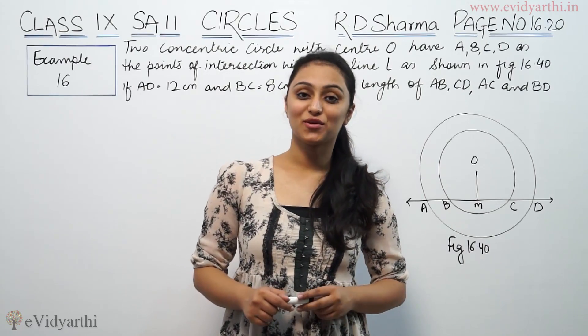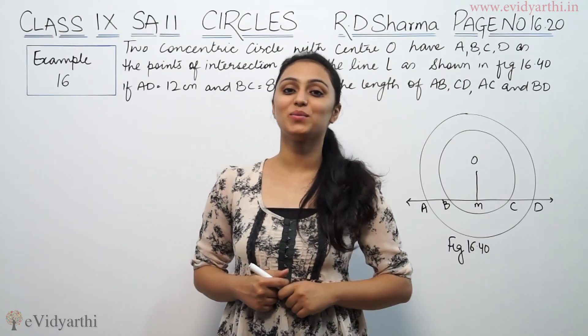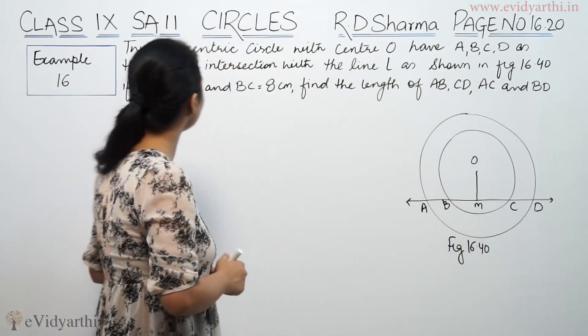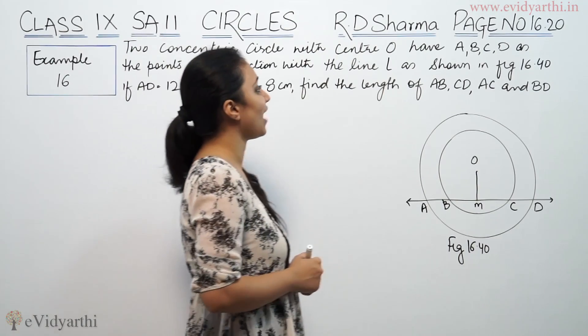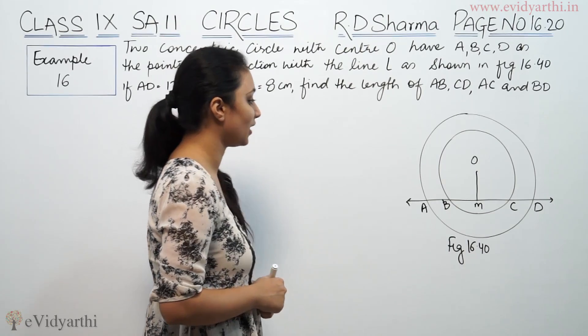Hi, this is Krishu with another question of circles. This is example number 16 from page number 16.20 of RD Sharma. This says two concentric circles with center O have A, B, C, D as the points of intersection with line L as shown.